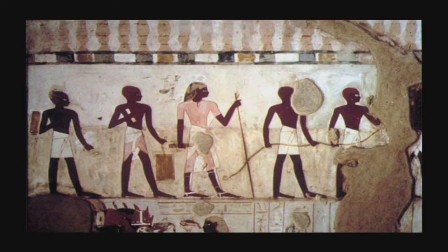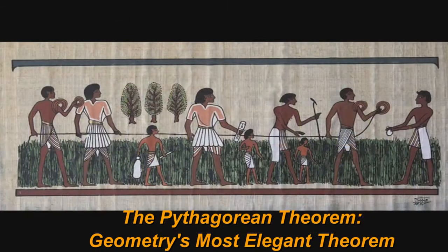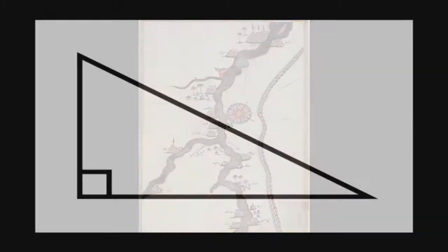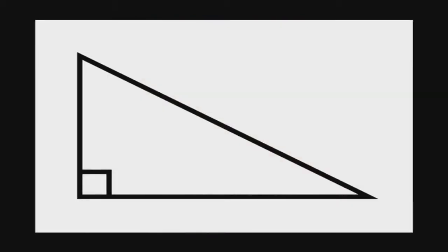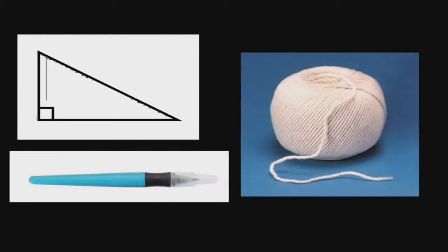So why is the Pythagorean theorem so important? How could that enable ancient Egyptian surveyors, using just a rope, to construct a right angle and reestablish property boundaries after the annual Nile River flood? What strategy could you come up with to form a right angle, given just a piece of string and a marker?